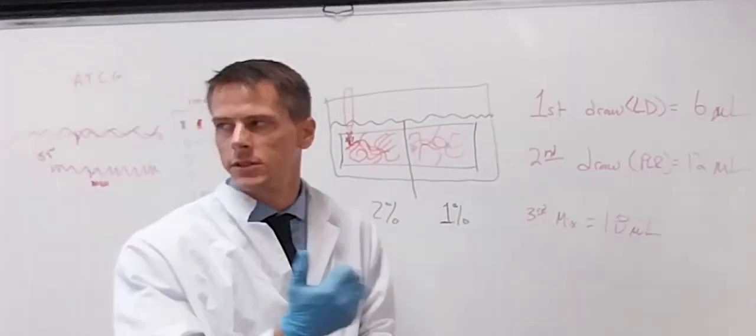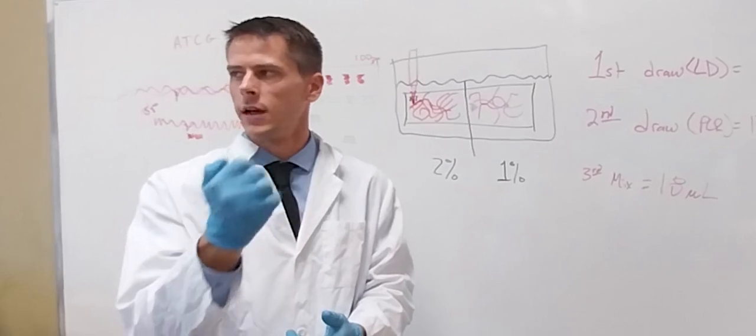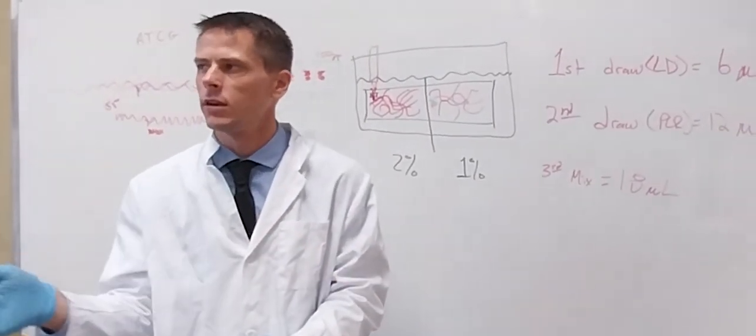Okay, so your first one is going to be at 6 microliters, 6.0, and that's where you're going to do your loading dye. So you put your dots down. I would put down six, 6 microliter dots in a row, so you have your six dots already lined up.